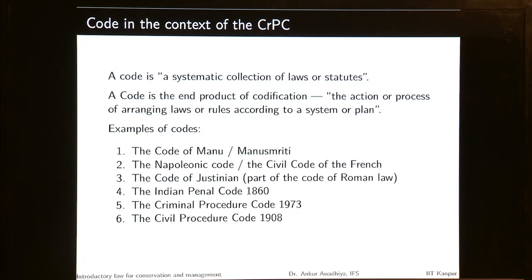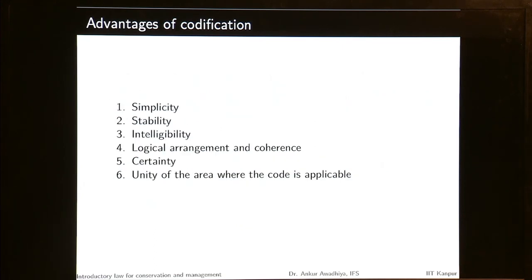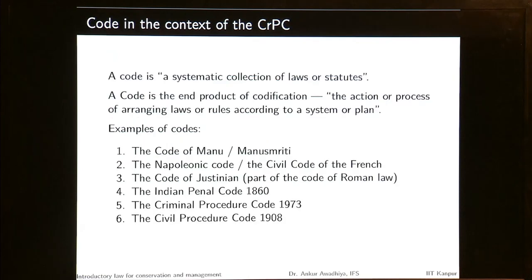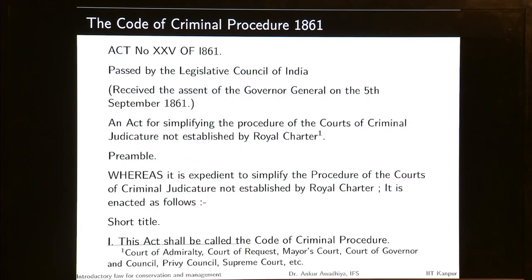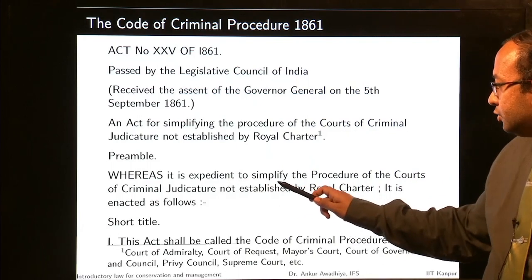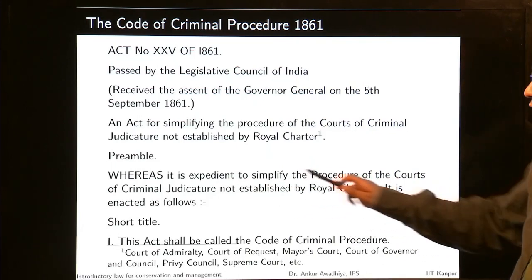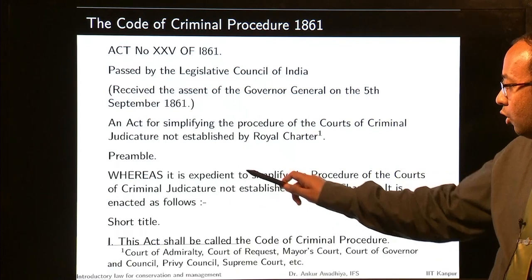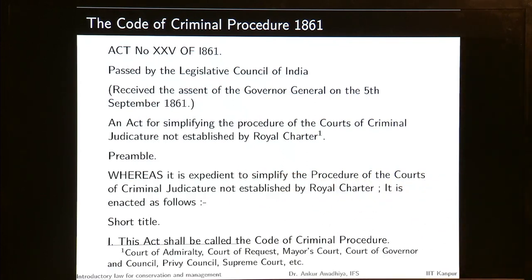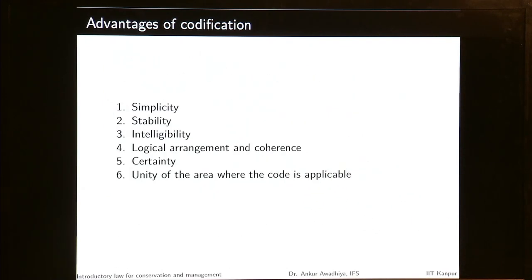It is the end product of a codification. Why do we need to have a code? Because it makes things simple. It gives stability, intelligibility, logical arrangement and coherence, certainty and unity of the area where the code is applicable. In the case of the CRPC 1861, it says whereas it is expedient to simplify the procedure of the codes of criminal judicature. So the objective was to simplify the procedure.